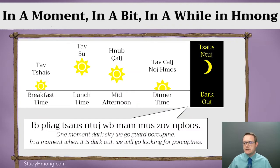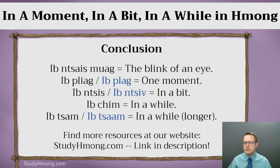So just as a reminder: the blink of an eye is the shortest. Longer than that is i-pli-a or i-pa — 'in a moment.' Longer than that is i-nji or i-nji in Green Hmong — 'in a bit.' Longer than that is Ichi — 'in a while.' And finally, longer than that is Ichi or in Green Hmong, Ichang — also 'in a while' but longer. All of these are relative, but hopefully this gives you an idea of how you can use them. I'll see you in the next video.